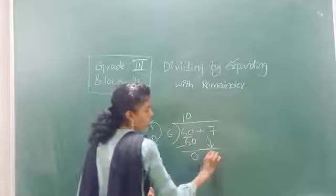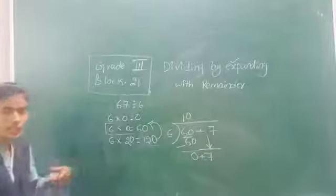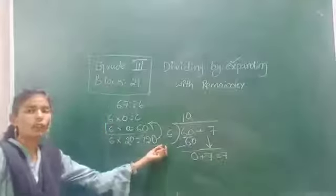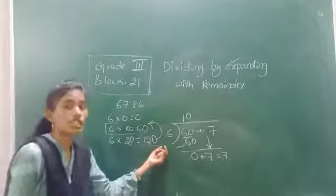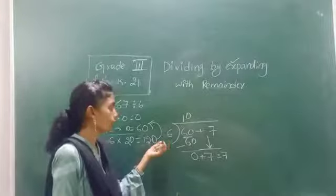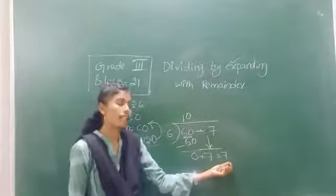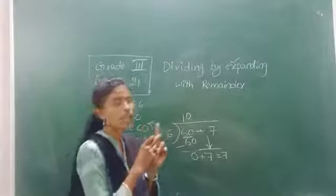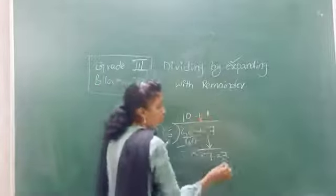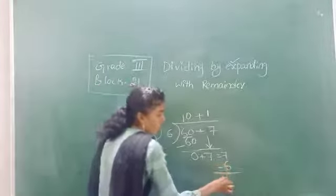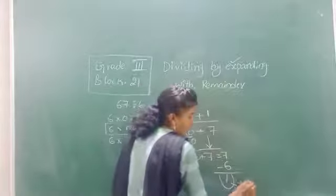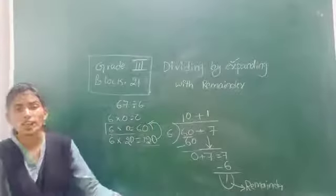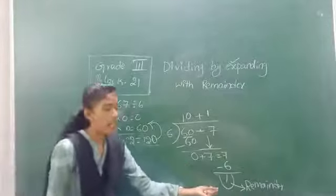Bring 7 down. So 0 plus 7 is nothing but 7. Now I can divide only 7 with 6. Do you know the normal table method? Just read the normal table until you get a number better than 7. 6 zeros are 0; 6 ones are 6; 6 twos are 12 — 12 is better than 7. Go to the number before it: 6 ones are 6. Now, 7 minus 6 is 1. What do you call that? 1 is the remainder. The number which is left after dividing is called the remainder. What is the remainder here? 1.